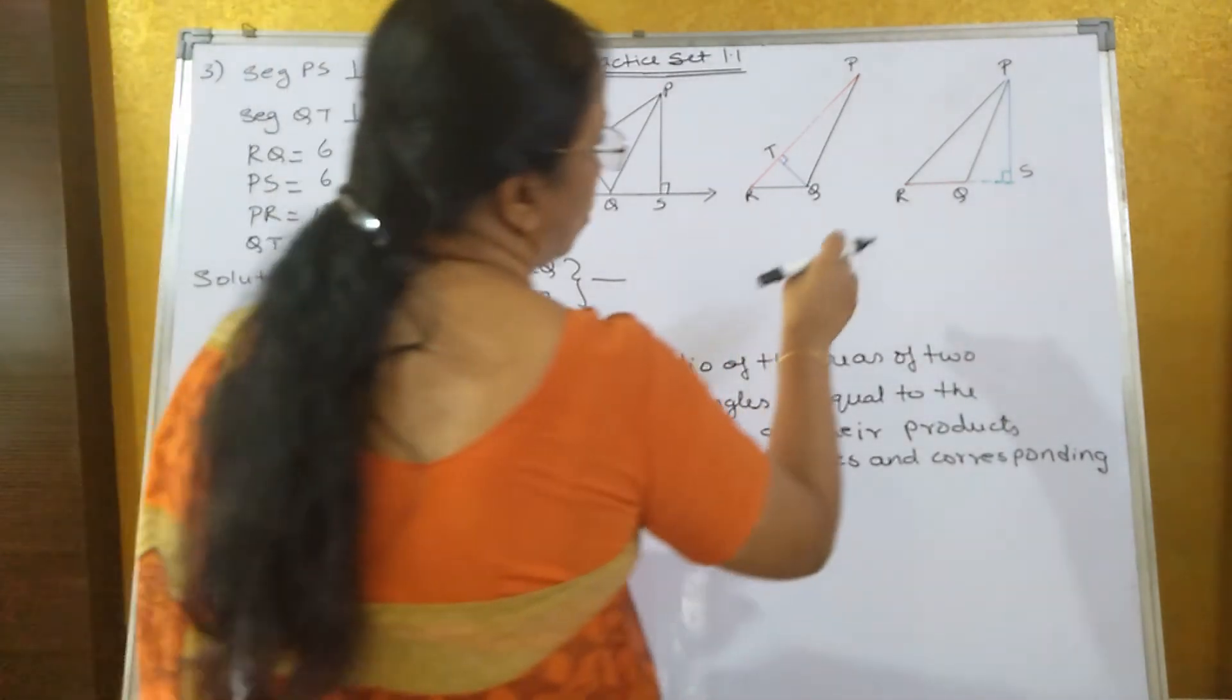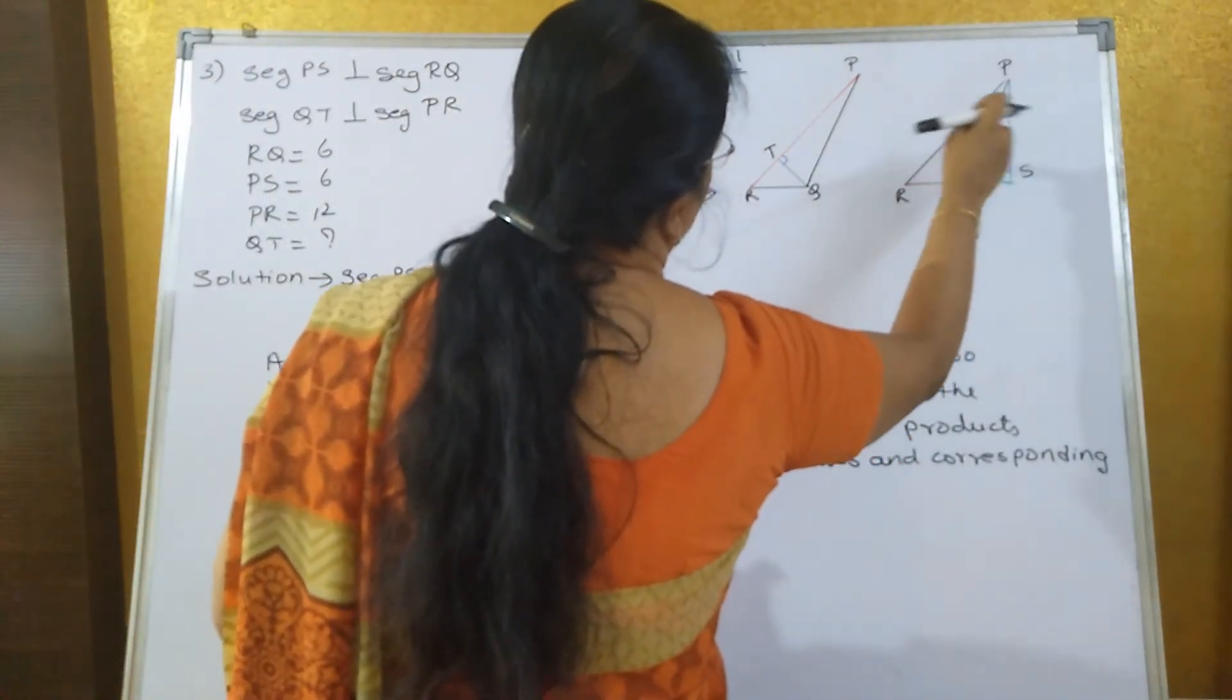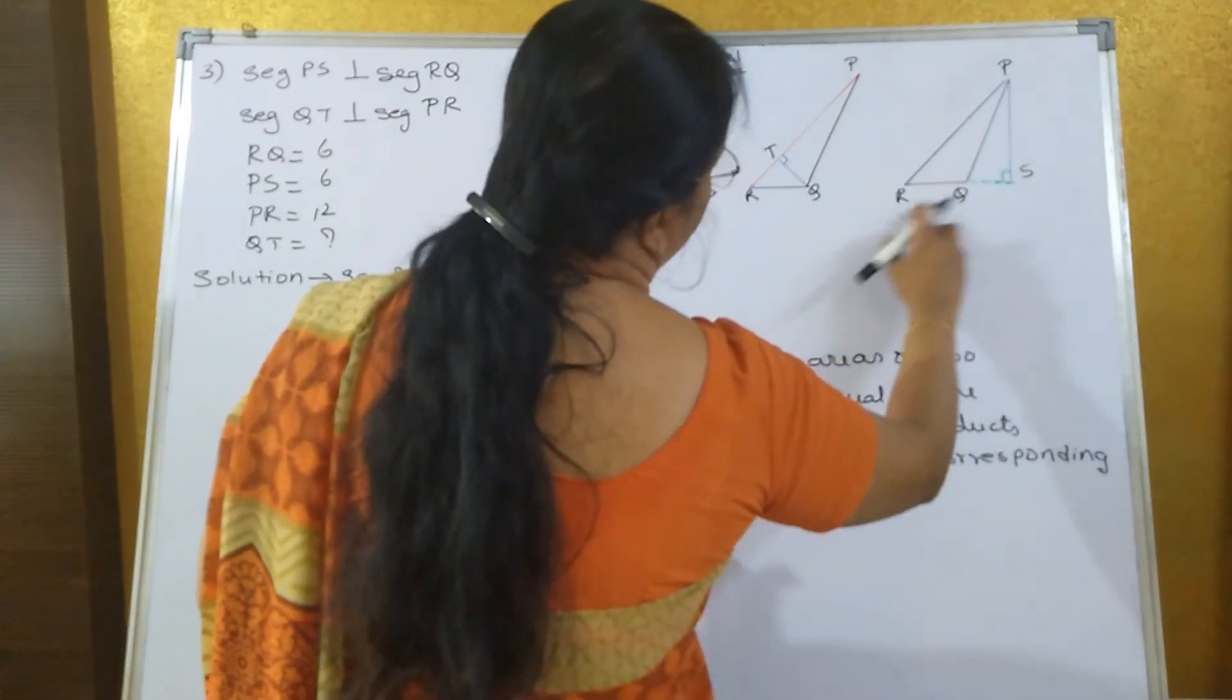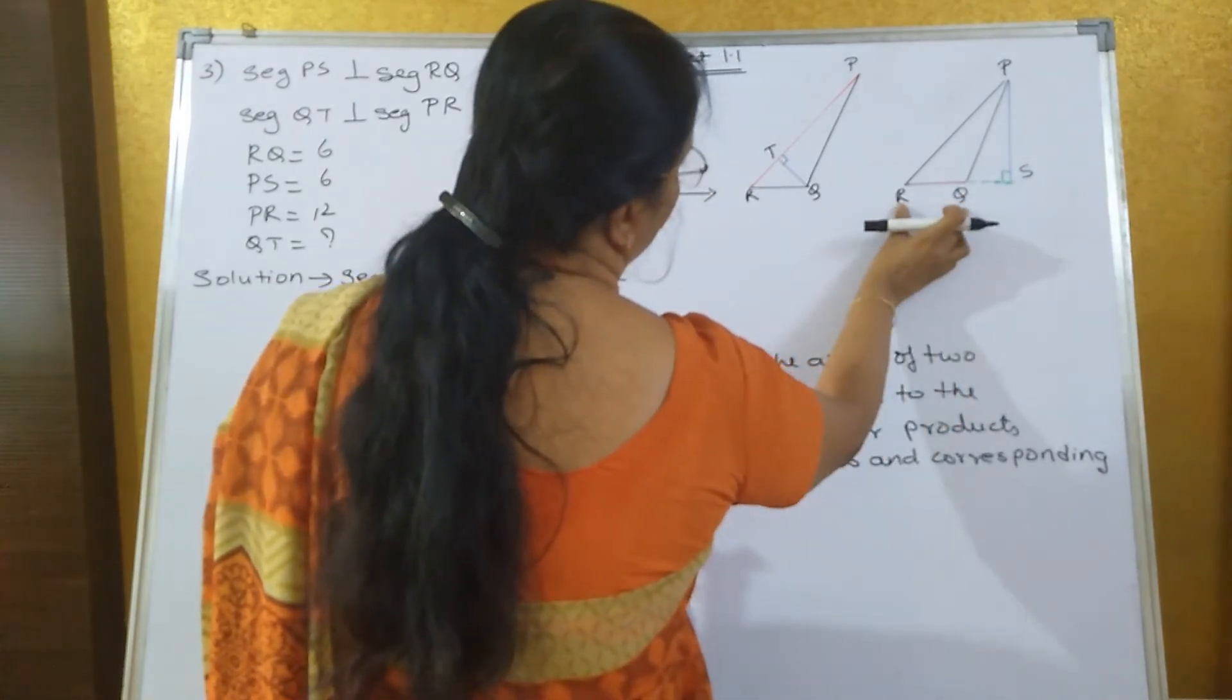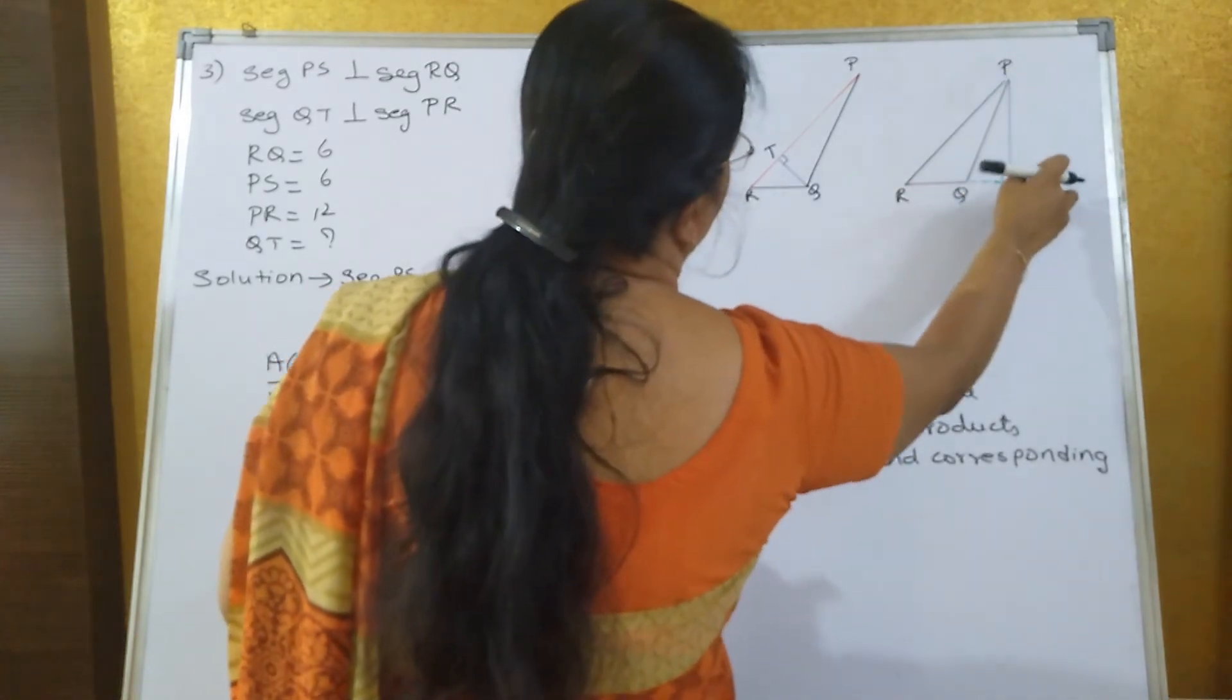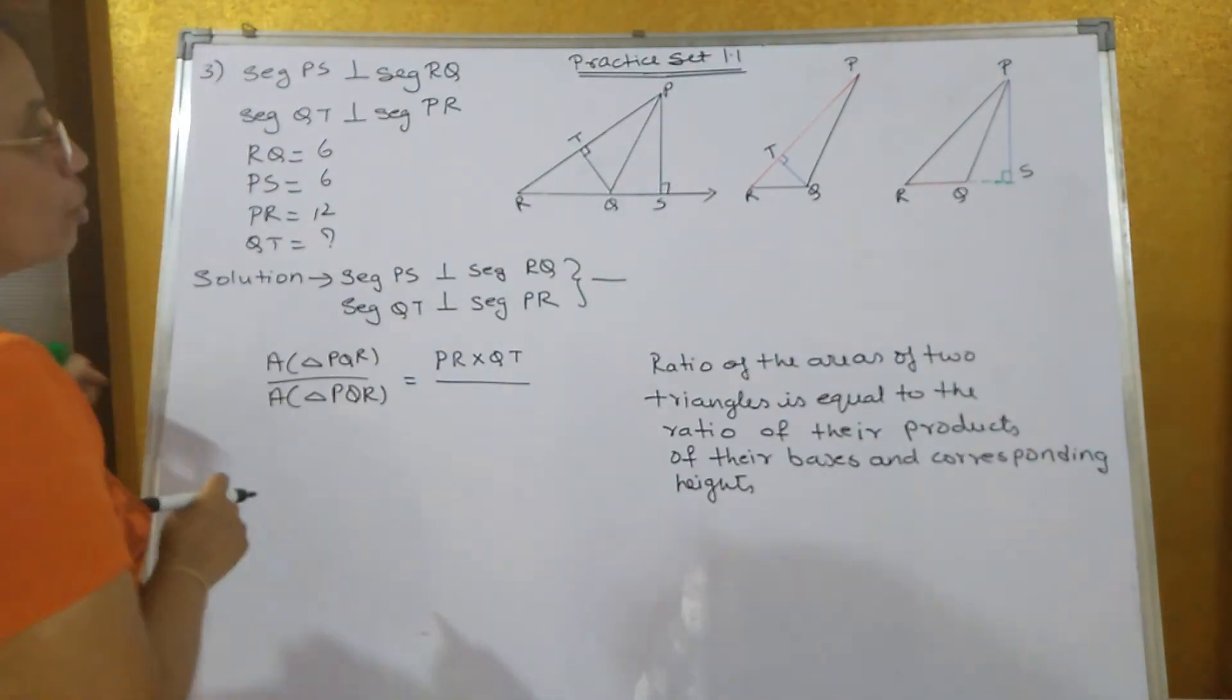And now you take the triangle PQR, same triangle PQR, but height this time you will take it over here. You will not take QT, you will take PS as the height and base is RQ. You are not supposed to take RS. QS is not the base, only RQ is the base. QS we have only extended to make that line fall on it, to stand on that particular base.